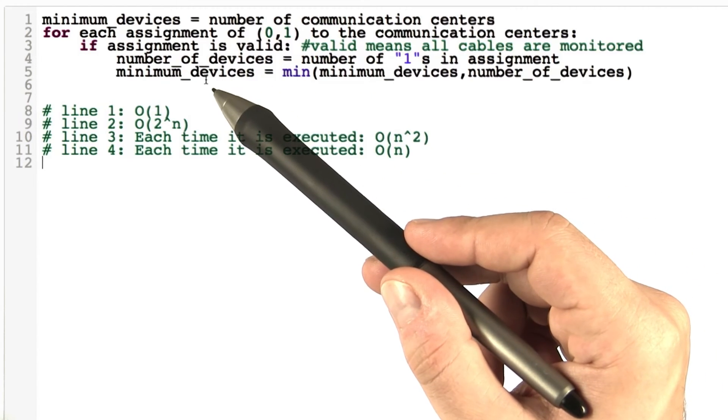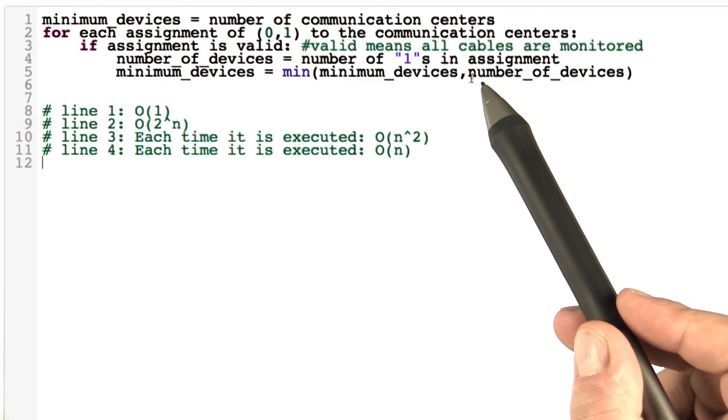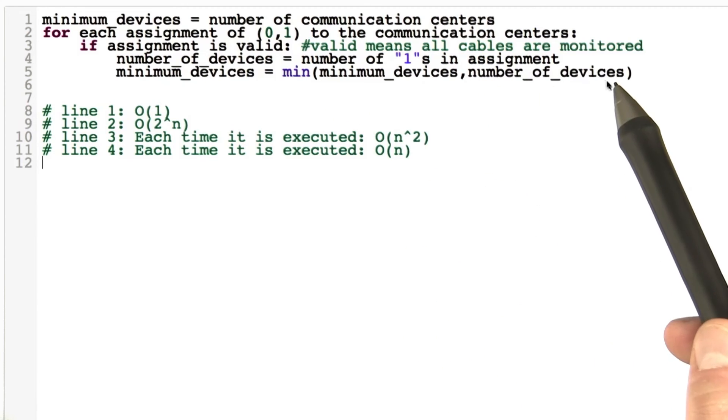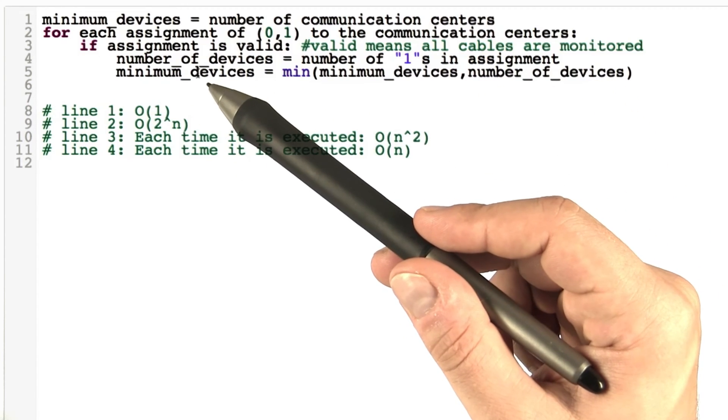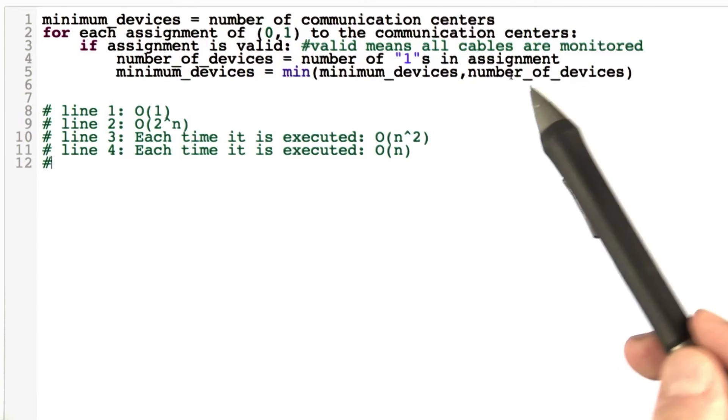And finally, line number 5. It's taking the minimum of the best possible solution we have found so far and the number of devices we have in the current solution to figure out if the current solution is a better solution than the one that we already have. But this, of course, takes only constant time because it does not depend on the size of the input.